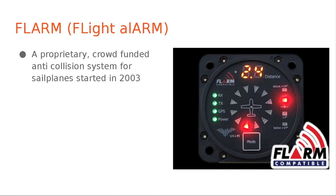FLARM is a proprietary crowd-funded anti-collision system for sailplanes that started in 2003. It was able to work in the uncertified world because there are frequencies allocated for scientific and medical use — FLARM uses 868 MHz, dedicated for non-voice communications. The power and the amount of time you're allowed to transmit is very very small and strongly regulated. FLARM works so well in instruments like the Air 3 or a beacon because it just pings once or twice a second for a very short period of time at very low power — you only really want to see the people who are at risk of injuring you.